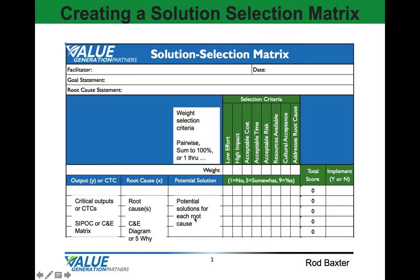Then we'll brainstorm as a team all the potential solutions to solve our problem. Once we've done that, we'll give those potential solutions a score of a 1, 5, or 9. I've also seen 1-3-5 and 1-2-3, or low-medium-high — whatever works best for you. I like 1, 5, and 9 because the final result shows a clear distinction between low, medium, and high.